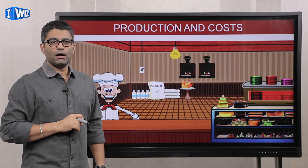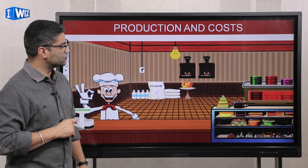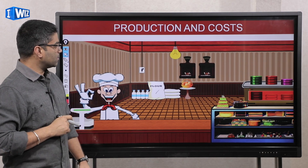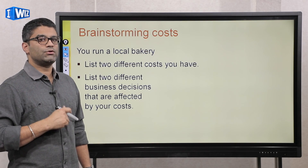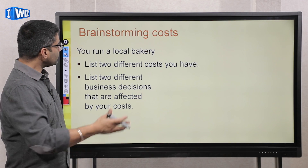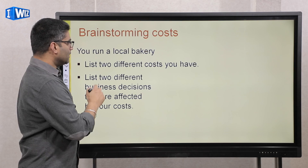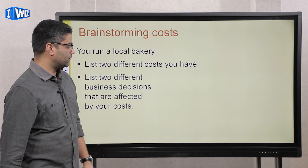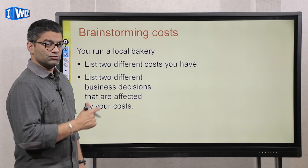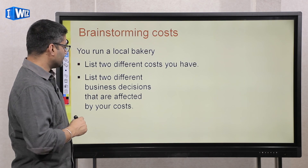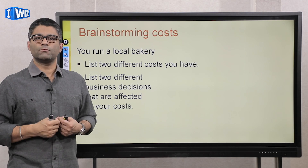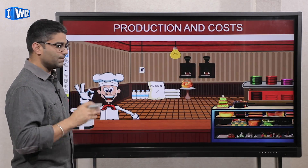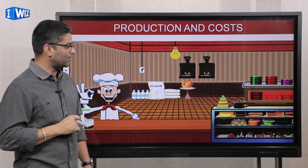That's the equation by which producers are going to operate. So I'll get back to this picture, but I'm going to ask you a question — pause the video, think about it, and then answer it. Let's say you own a local bakery. List two different kinds of costs and think about two decisions you might have to make based on those costs. Pause the video and answer those questions, then come back.